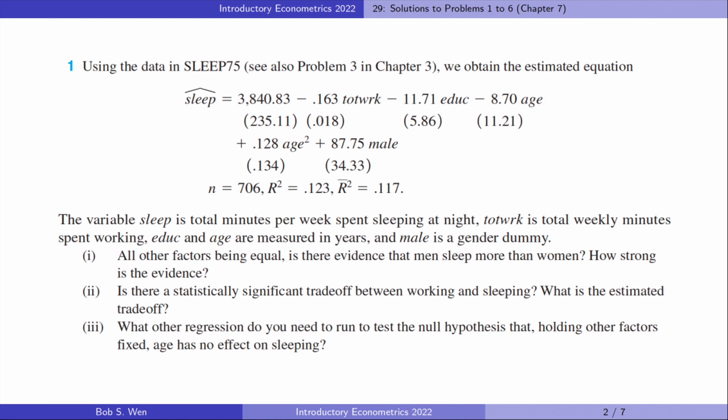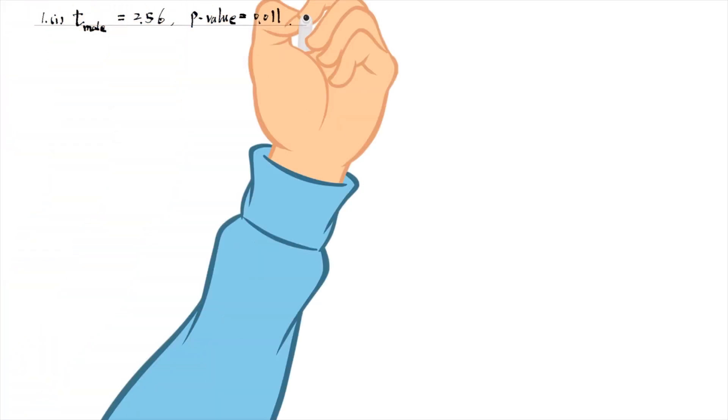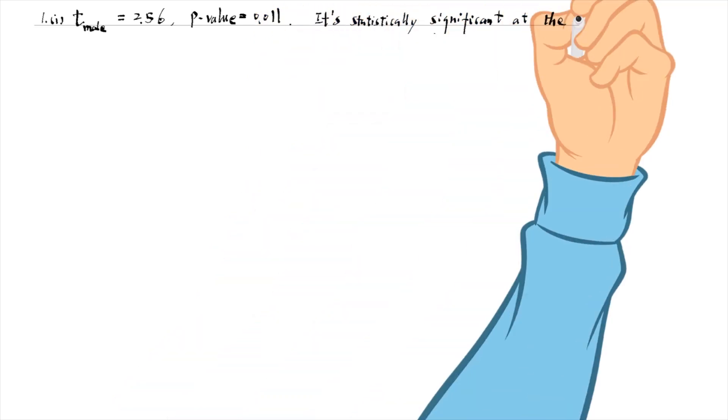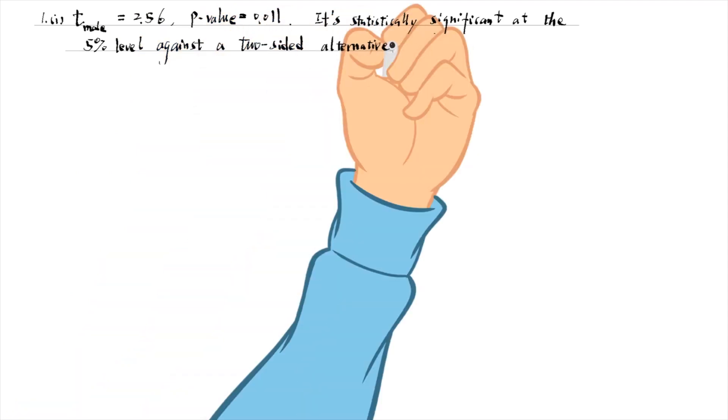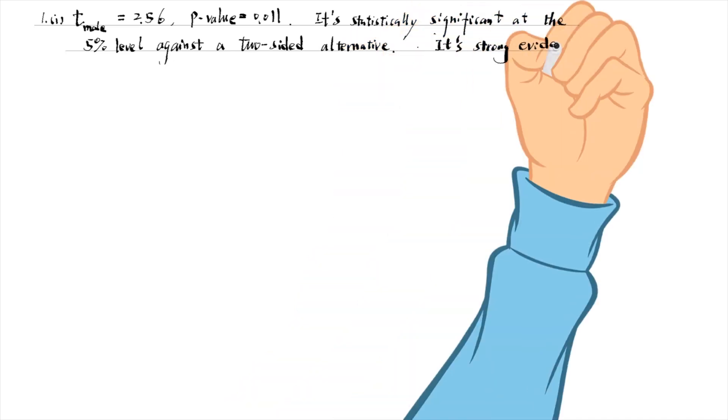For the first problem, we find that the t-statistic of the estimate for male equals 2.56 and its p-value is 0.011. The sleeping time difference between male and females is statistically significant at the 5% level. Men sleep 88 minutes per week more than women on average, holding the other variables in the model fixed. It is strong evidence.